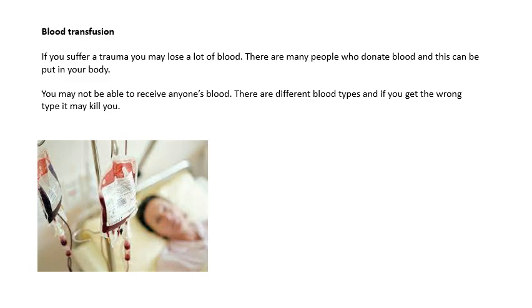Blood transfusion: if you've been in an accident and lost a lot of blood, luckily there are people who donate their blood, and the hospital can give you some to save your life. However, you may not be able to receive anybody's blood because there are different blood types. If you get the wrong type of blood, that could kill you — there could be a reaction between the chemicals and proteins, and your blood vessels might start sticking together.